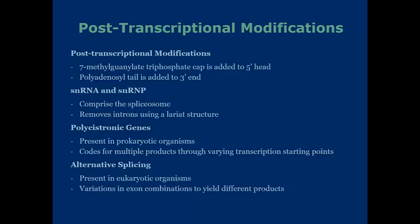HnRNA and snRNPs, as I like to call them, comprise the spliceosome, which removes introns using a lariat structure. What happens is we have introns and exons — exons which exit and introns that stay in the nucleus. The hnRNA is going to fold on itself in a lariat, and the spliceosome is going to bring two positions together into one spot and then cut it off. So what you're often going to see is either one side or the other side is going to be the exons. This is another way that the cell will regulate which genes are expressed, where these are spliced and cut, allowing for multiple different types of genes to come out of the same sequence.